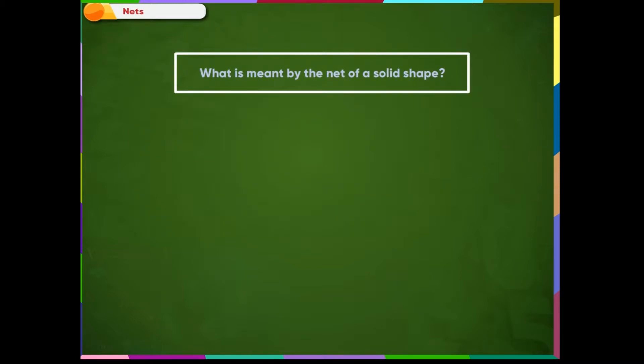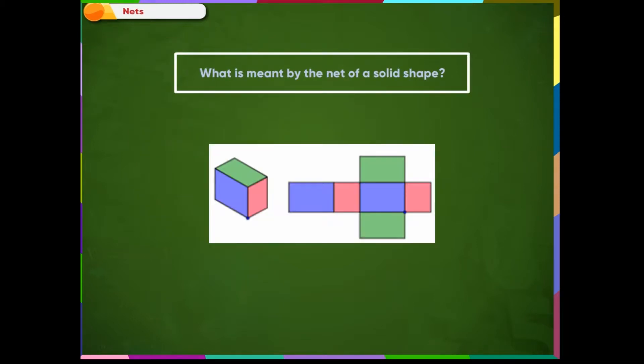What is meant by the net of a solid shape? A net is a two-dimensional shape that can be folded to form a three-dimensional shape or a solid.